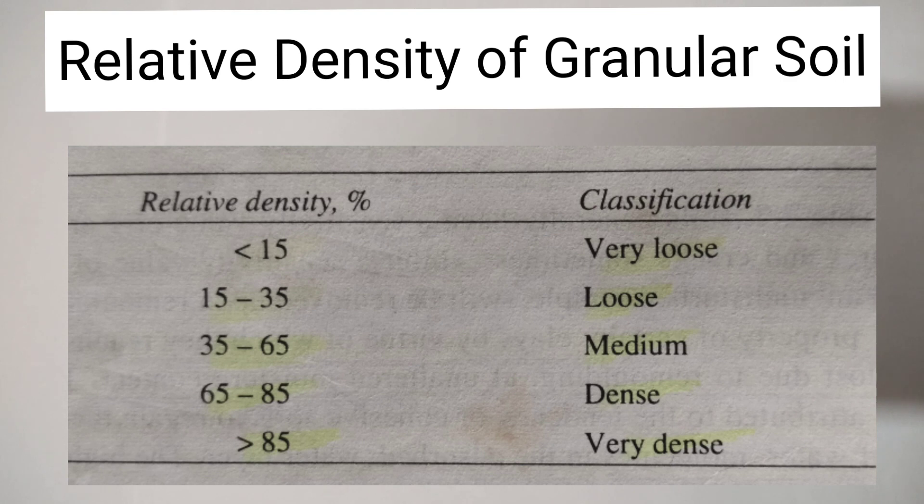Here in the table, based on the relative density, the granular soil is classified as: if the relative density is less than 15, it is very loose soil. If relative density is between 15 to 35, it is loose soil. If relative density is in between 35 to 65, it is a medium type of soil. If the relative density is in between 65 to 85, it is a dense soil.